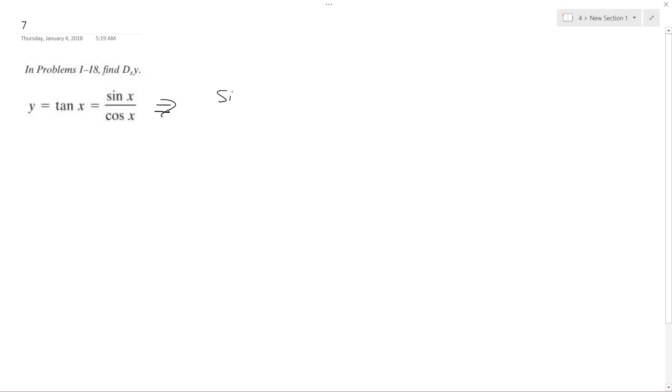So what we'll have here is we'll take the derivative of the sine of x times cosine of x minus sine of x times the derivative of what's on the bottom, and then basically the bottom squared.